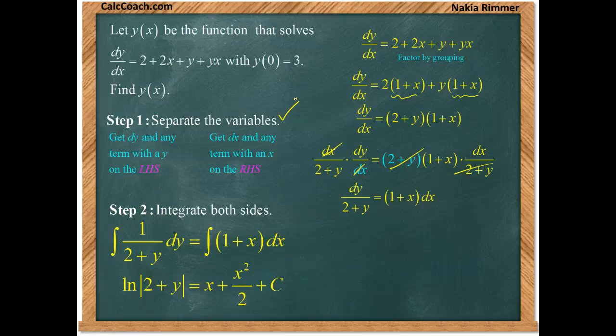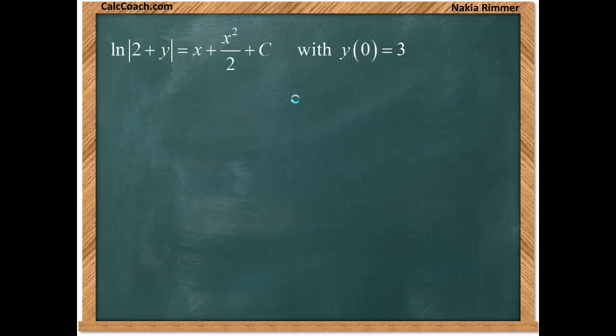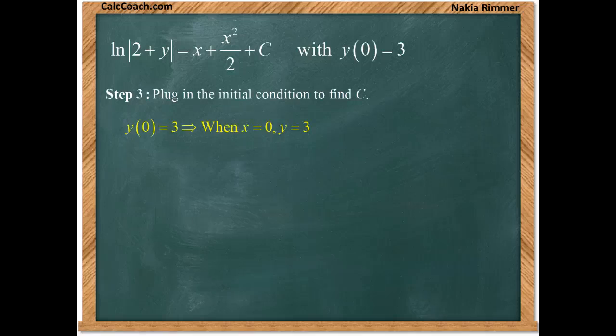We'll take that condition, y(0) = 3, and find out what that constant is. What the condition says is that when x is 0, y is 3. So we plug that in, and that helps us find out the only variable that will be left, which is C.